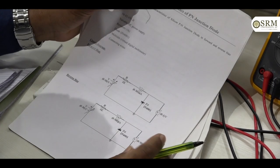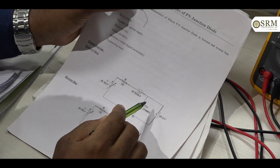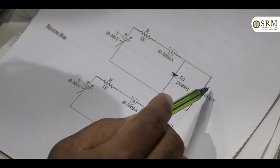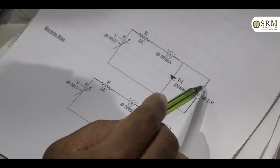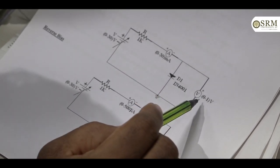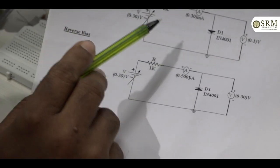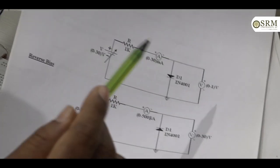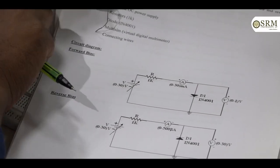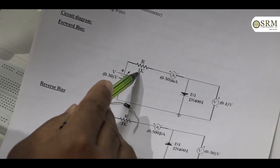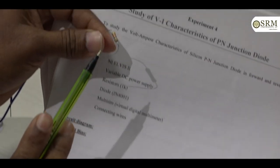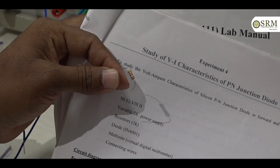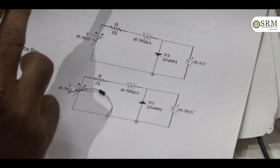In this experiment we are using this diode along with two meters. One is the ammeter and the other is the voltmeter. The voltmeter range is 0 to 30 volts and the ammeter range is 0 to 200 milliamps. We are also using one more component — a 1k resistor. How to identify the 1k resistor was already discussed in previous sessions.